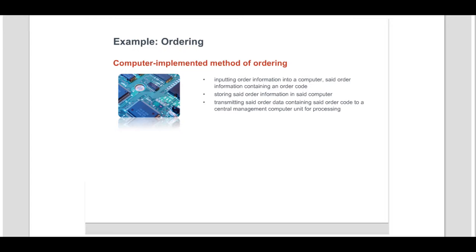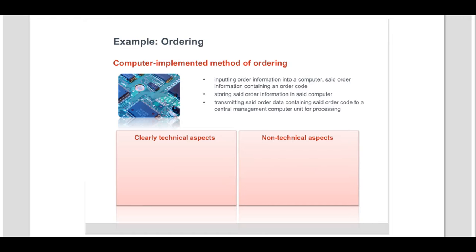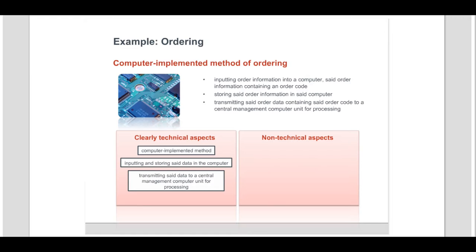The claim therefore comprises clearly technical aspects as well as non-technical aspects. The clearly technical aspects of the claim lie in the following. Firstly, the method is implemented in a computer — the adaptation of a computer system for carrying out a method is a technical function. Secondly, the basic functions of the computer, including inputting, storing, and transmitting data, have technical character.